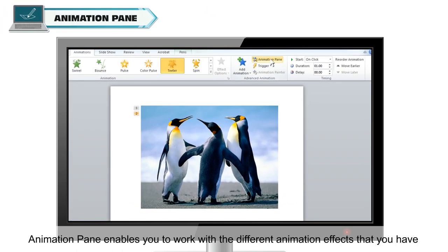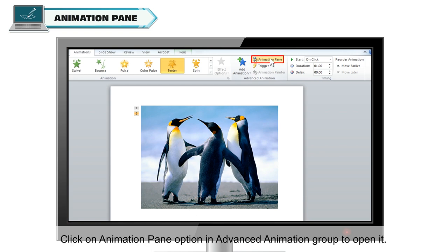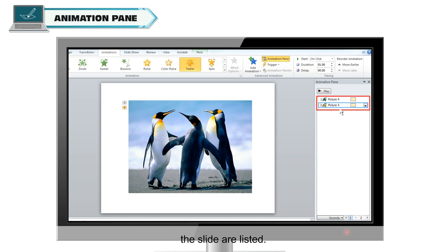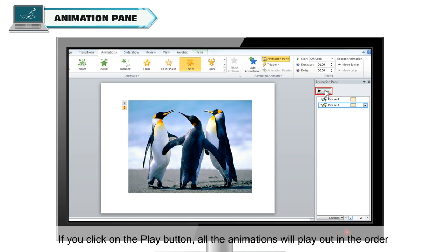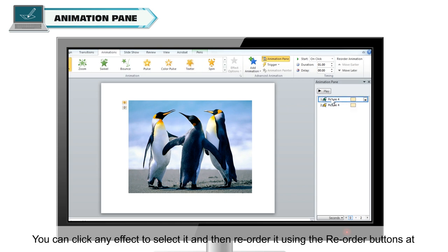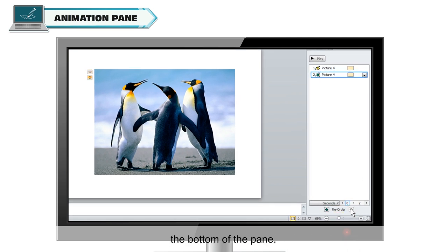Animation Pane: the Animation Pane enables you to work with the different animation effects applied to slide objects and modify them. Click on the Animation Pane option in the Advanced Animation group to open it. All animation effects applied to the different objects of the slide are listed there. Click the Play button to play all animations in the order they were applied. You can click on any effect to select it and reorder it using the Reorder buttons at the bottom of the pane.